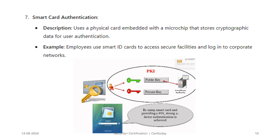Finally, we have smart card authentication, which uses a physical card embedded with a microchip that stores cryptographic data for user authentication. For example, employees use smart card IDs to access secure facilities and log into corporate networks. Authentication is a critical security process that ensures only authorized users gain access to systems and data. Various methods — ranging from passwords and biometrics to tokens and certificates — offer different levels of security depending on the context and risk level. Effective use of authentication methods helps organizations protect sensitive information, maintain trust, and comply with regulatory requirements.